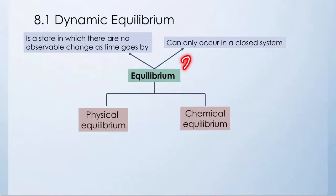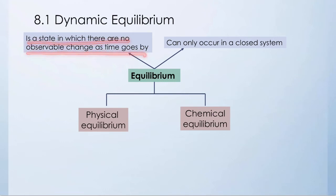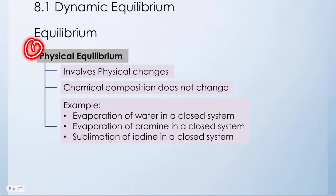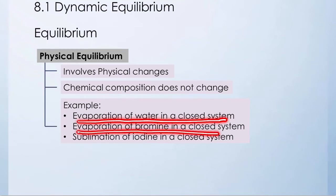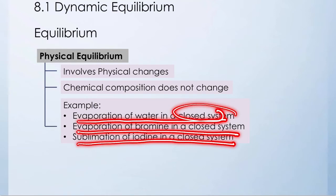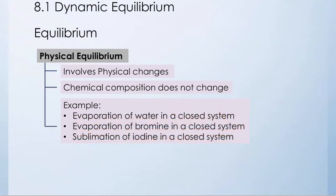Equilibrium is a state in which there are no observable changes as time goes by — meaning there is no further change in concentration with time, and it can only occur in a closed system. There are two types of equilibrium: the first one is physical equilibrium, and the second one is chemical equilibrium. Physical equilibrium only involves physical changes, and the chemical composition does not change. Examples include evaporation of water in a closed system, evaporation of bromine in a closed system, and sublimation of iodine in a closed system.